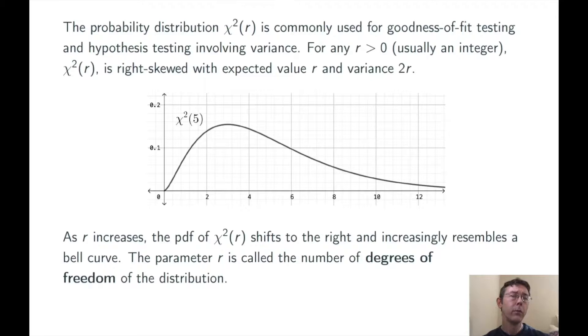Incidentally, notice that I'm using the words chi-squared to mean two different things here, both the random variable itself and its distribution. Context will always make it clear which one is being discussed.